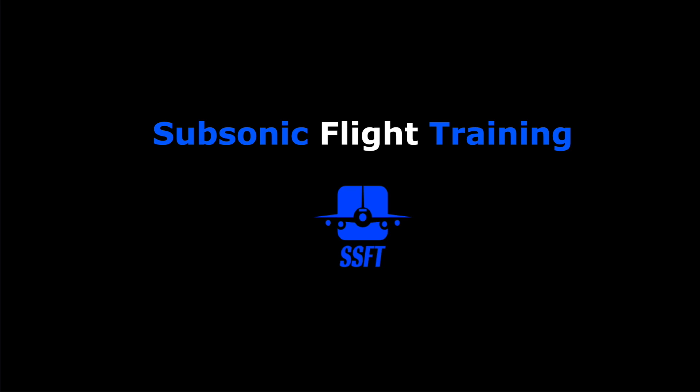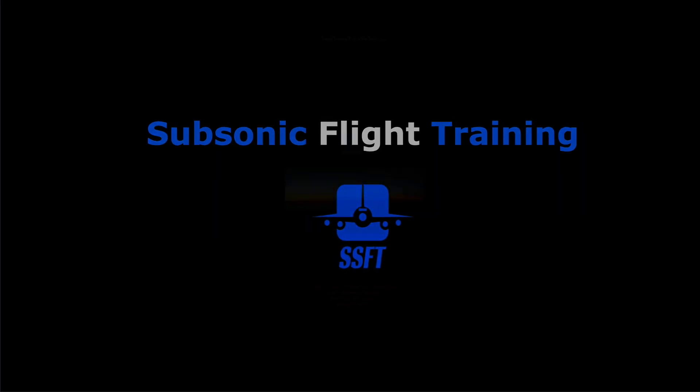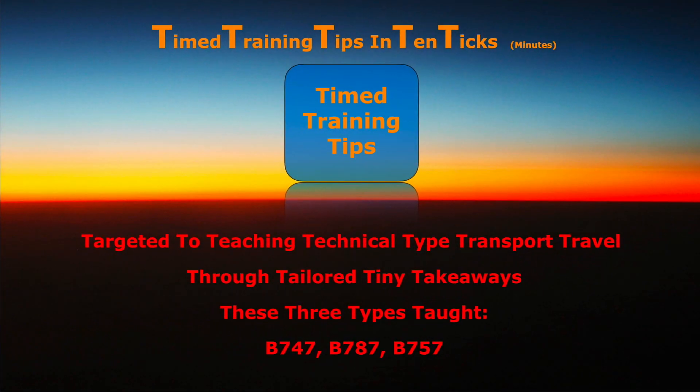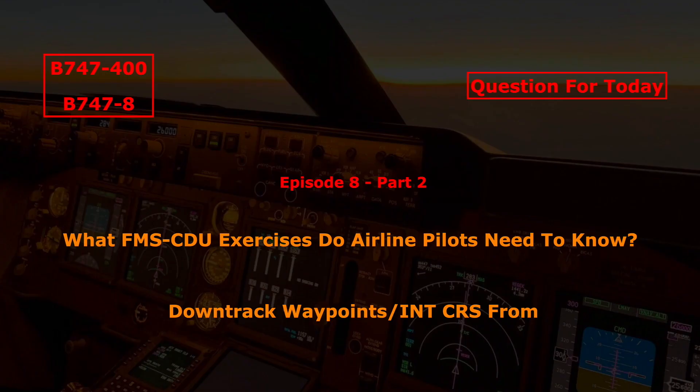Hi everybody, Captain Al speaking with your time training tips and ten ticks targeted to teaching technical type transport travel through tailored tiny takeaways. The question for today, episode 8, part 2: what FMS-CDU exercises do airline pilots need to know? Today we take a look at down track waypoints and intercept course from, for the Boeing 747-400 and Boeing 747-8.